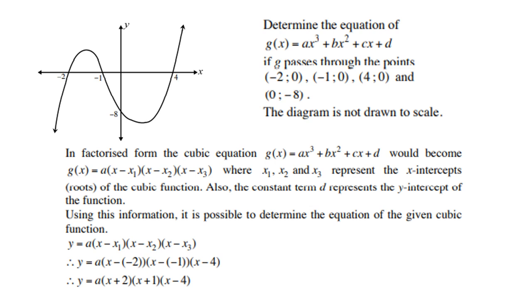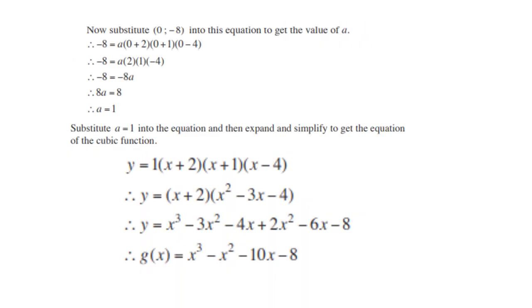Next is now, we must find the value of a. To find the value of a, we're going to substitute the y-intercept (0, -8) into the equation. So y is -8, and all three x-values become zero. Simplify and divide by 8, so therefore a = 1.